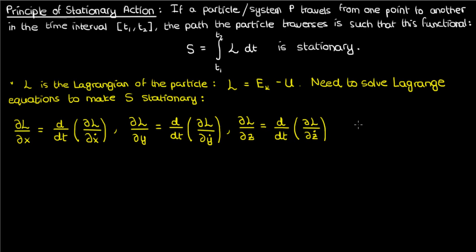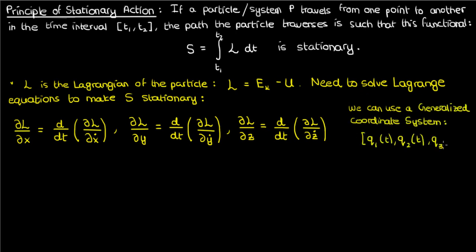We don't necessarily need to be in Cartesian coordinates to apply the principle of stationary action — we could just as easily use cylindrical coordinates or spherical coordinates. In general, we can use a generalized coordinate system given by q1, q2, and q3, and formulate the exact same Lagrange equations for that generalized coordinate system, where q1, q2, and q3 can be any nice enough coordinates that you want. This is one reason the Lagrange equations are so useful — we can easily apply them to other coordinate systems.